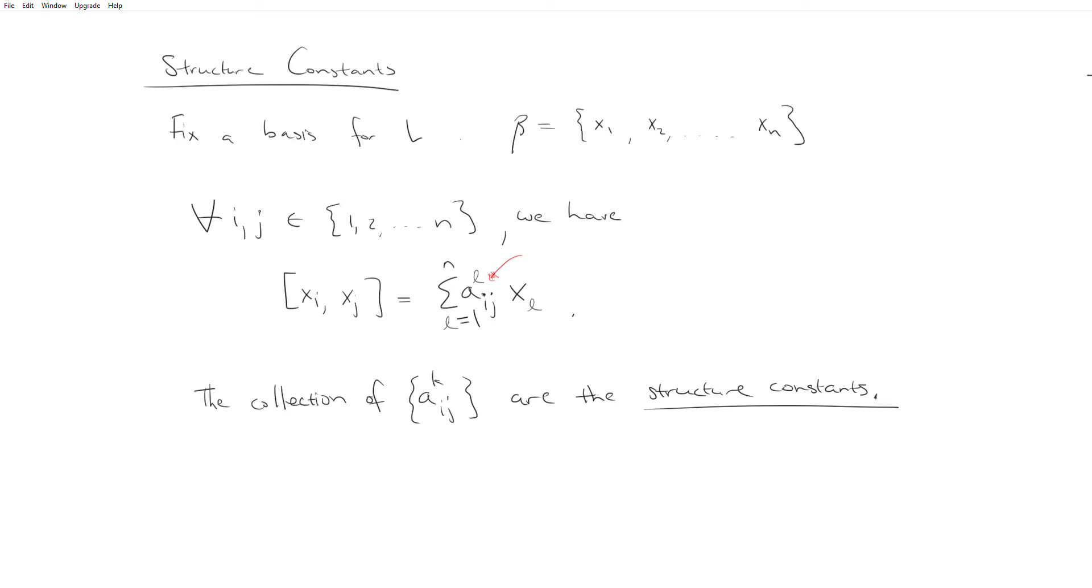So here, what we're going to do is just look at the pairwise bracket between any two vectors in our basis. So suppose I had x sub i and x sub j for any i and j between one and n inclusive, and I take the bracket between the two of them. That's going to give me another vector in the space, and so I can represent that as a linear combination of my basis vectors.